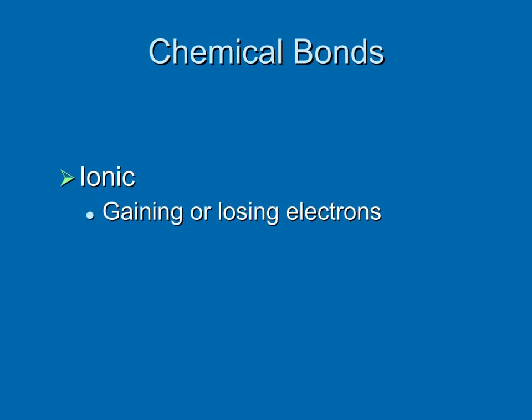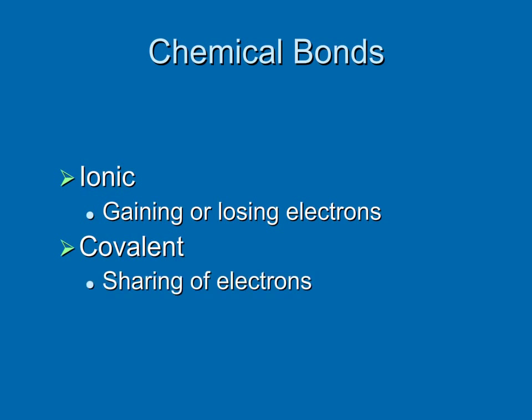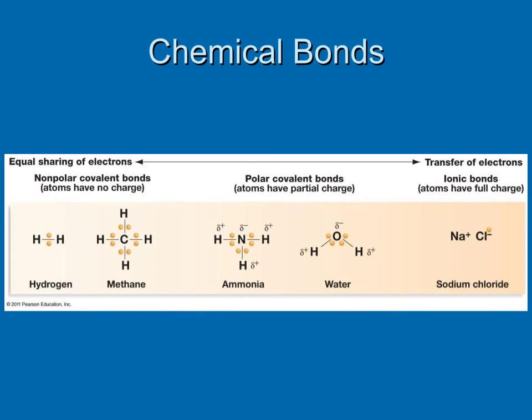Ionic bonds, in which atoms gain or lose electrons. And covalent bonds, in which atoms share electrons. Chemical bonds can be seen as a continuum. In some molecules, we see the atoms playing nice with each other and equally sharing their electrons. While in other interactions, atoms steal electrons from their partners.